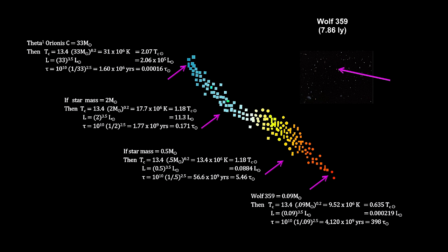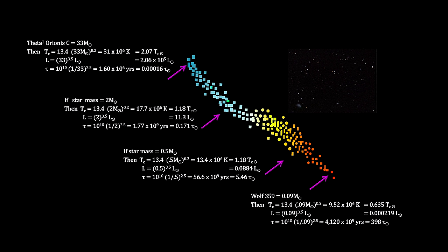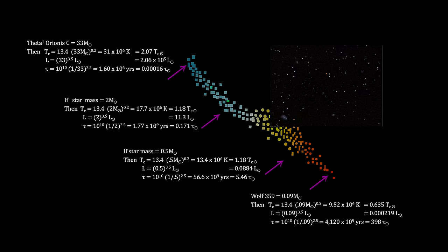At the other end, Wolf 359 is just under a tenth of the mass of the sun, and will remain a main sequence star almost 400 times longer than the sun. The dramatically shorter time on the main sequence for higher-mass stars and extremely extended time for lower-mass stars is due to the proton fusion process's sensitivity to temperature.